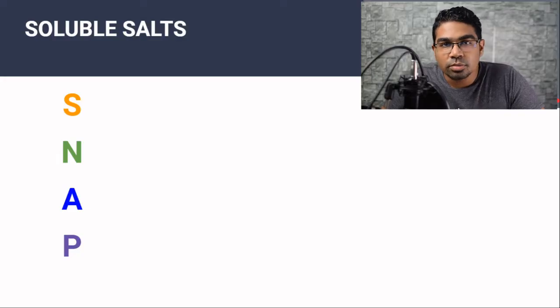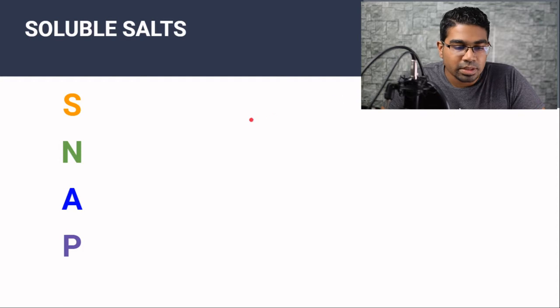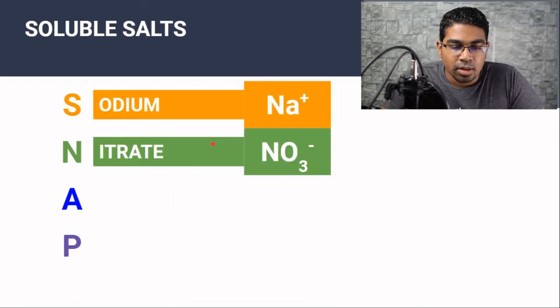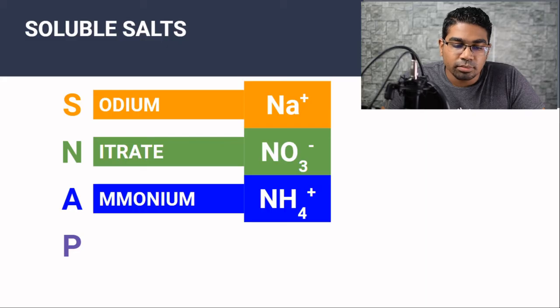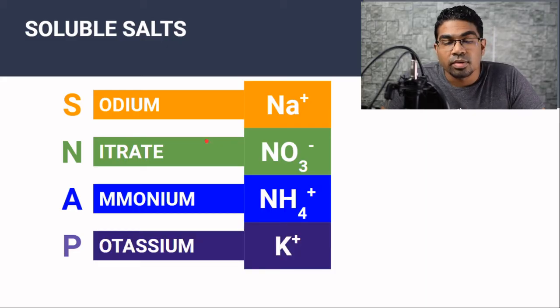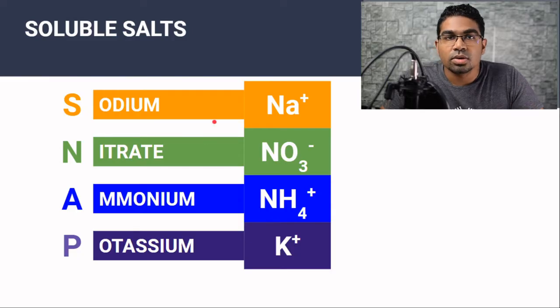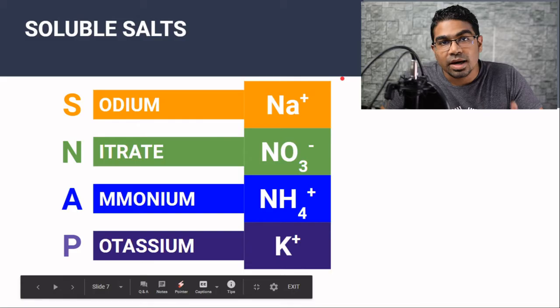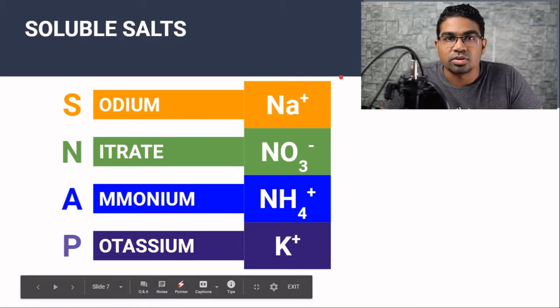First, let's look at soluble salts. For soluble salts, all we need to remember is SNAP. SNAP stands for sodium, nitrate, ammonium, and potassium. Remember, salts are made of cations as well as anions. So if a salt contains any of these ions, the other ion doesn't matter — it will be soluble.